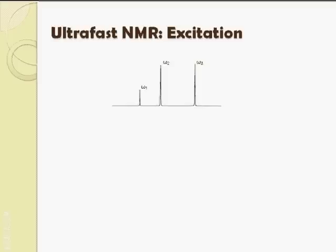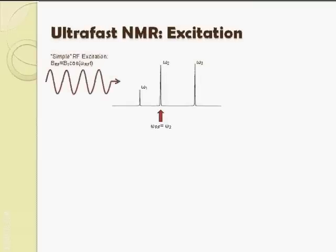When we irradiate the sample, we can tune the RF frequency to each of the three peaks. We can tune it to the second, the third or the first peak. Whenever we tune it into a particular peak and irradiate, the other peaks will be less affected.